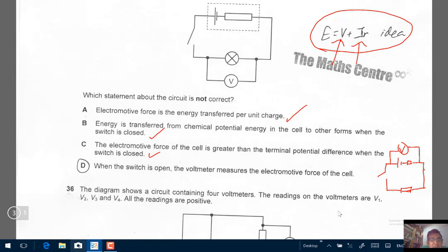So by simple elimination, D must be the response. Let's read D. When the switch is open, the voltmeter measures the electromotive force of the cell. This is definitely wrong. So what I have done is, I have drawn a circuit here with the switch open.